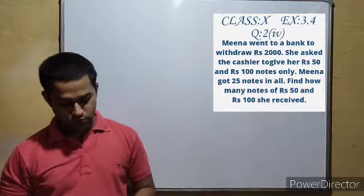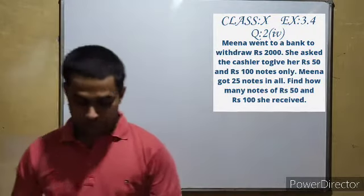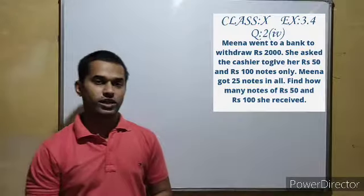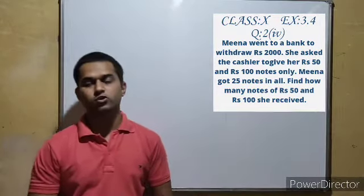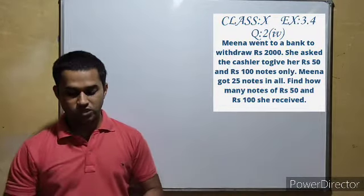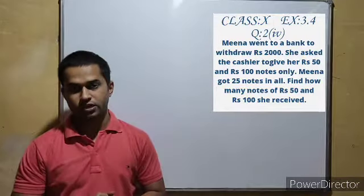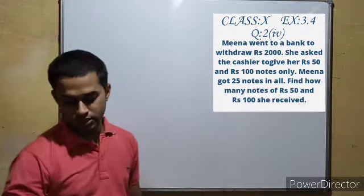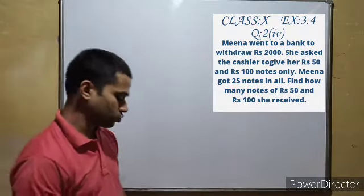Meena went to the bank to withdraw 2000 rupees. The cashier gave her 50 and 100 notes, totaling 25 notes. She asked how many notes of 50 and 100 she received. Now, before we solve this, we have to set up the problem.